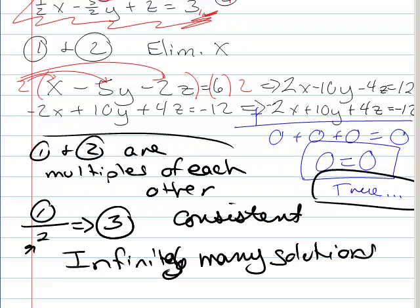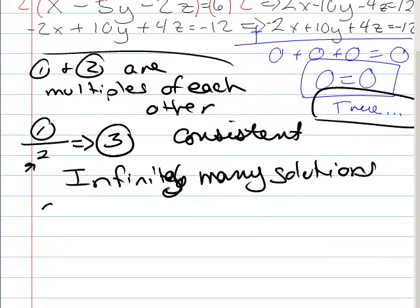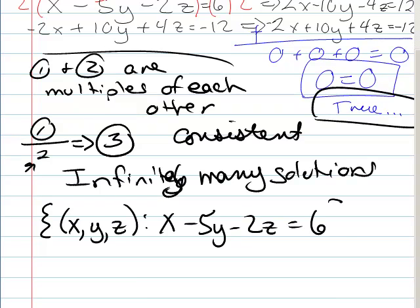And the way that I can formally write that is to say that my solution set is x, y, and z, such that x minus 5y minus 2z is equal to 6. So I just pick one of those equations and say, you know, I can't tell you explicitly what those are gonna be. But, you know, in general, they're gonna follow this pattern here.